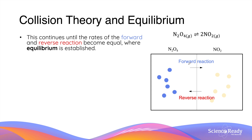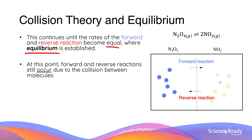As the forward reaction rate decreases and the reverse reaction rate increases, this continues until the rates of the two reactions become equal — at which point the reaction achieves equilibrium. At equilibrium, the forward and reverse reactions still occur because molecules still collide with one another. The key point is that they occur at the same rate, which is what defines a dynamic equilibrium.